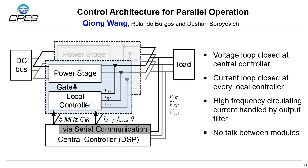Here shows the control structure for paralleling two modules. The control implementation consists of a central controller for the voltage loop and local controllers for current loops. There is no communication between the local controllers, and there is no active control on circulating current between the modules. As each module controls their own output current, there shouldn't be low-frequency circulating current if the current controllers are functional. The high-frequency circulating current is mitigated by the output common mode and differential mode filters.